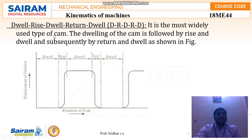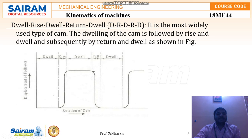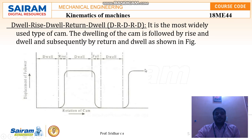This Dwell-Rise-Dwell-Return-Dwell pattern is most widely used. The dwelling is followed by rise, then the follower is in dwell (stationary), then it falls or returns to the original position, then again enters dwell. The cycle repeats in the same form. These three motion patterns — R-R-R, D-R-R-D, and D-R-D-R-D — are the main types used in industries and machines for machining processes.